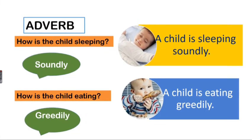An adverb is a word that modifies or describes a verb. For example, how is the child sleeping? The child is sleeping soundly — 'soundly' is the adverb explaining the verb. In example two, how is the child eating? The child is eating greedily — 'greedily' is the adverb here.